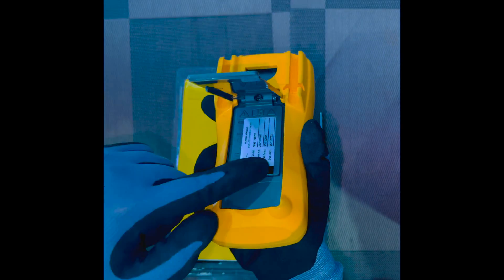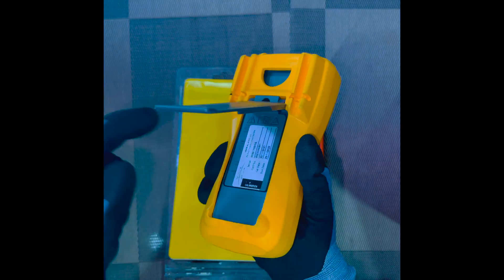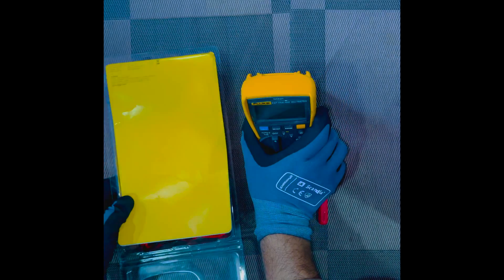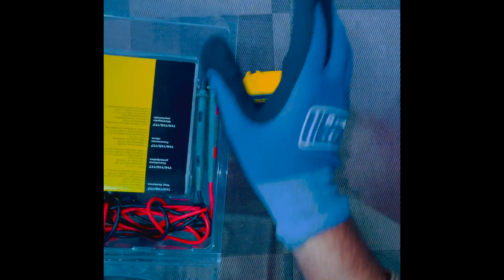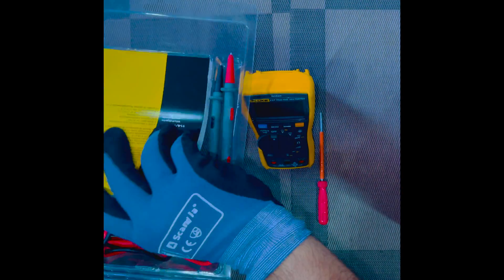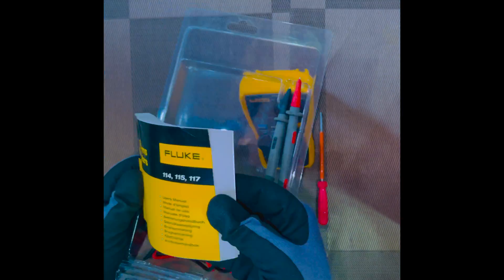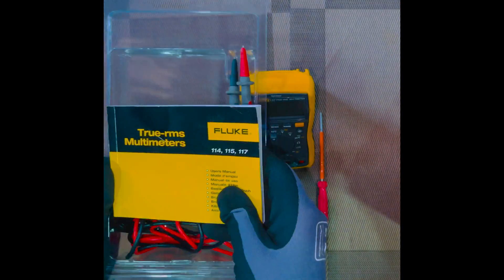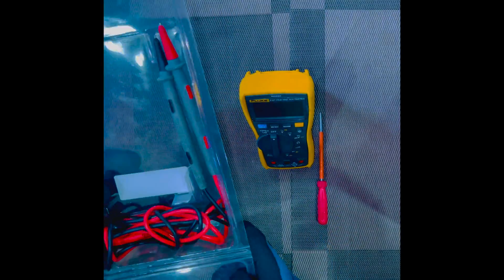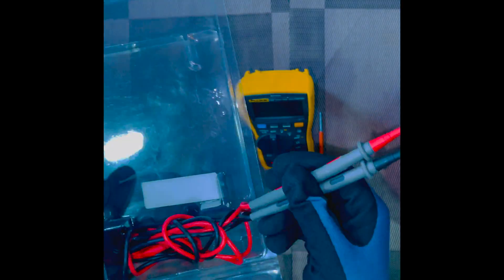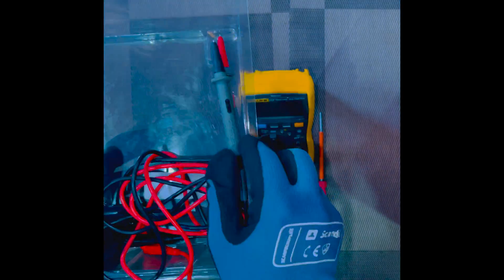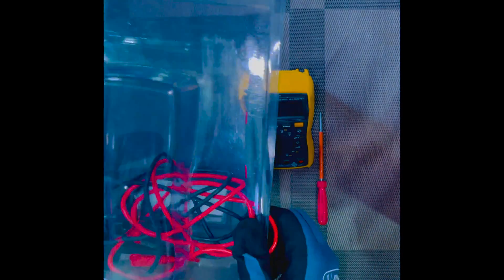There is a battery pack inside this, we will learn each and everything in a while. Let's open the box. There is one manufacturer sticker here, this is the manual for the Fluke multimeter. And here is a set of probes which we will learn and understand its use accurately in a while.